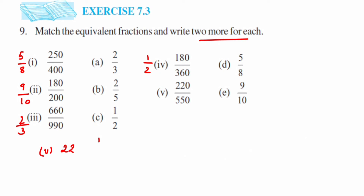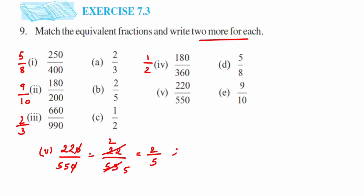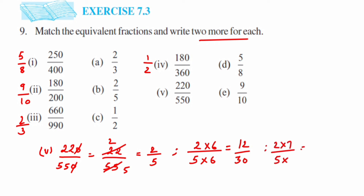Last we have 220 upon 550. Cancel the zeros to get 22 upon 55. Both 22 and 55 are in the 11 table: 11 twos are 22 and 11 fives are 55, giving 2 upon 5. For equivalent fractions of 2/5: multiplying by 6 gives 12/30; multiplying numerator and denominator by 7 gives 2×7 = 14 and 5×7 = 35, so 14/35.